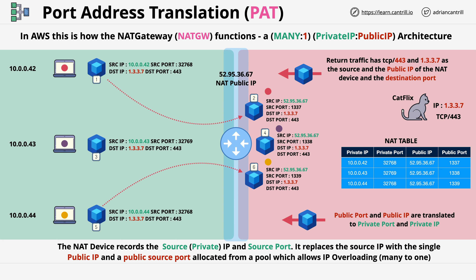It's worth pausing to make sure you really understand how this process works, because it's how your home router works and it's how the NAT gateway within AWS works. Once you understand it, you'll understand why with port address translation you can't initiate traffic to these private devices — because without an entry in the NAT table, the NAT device won't know to which device traffic should be translated and forwarded to.